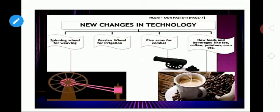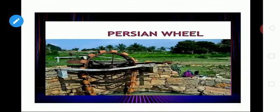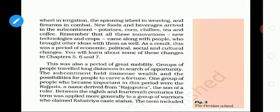New foods and beverages like tea, coffee, potatoes, and chillies also came into existence. All these innovations — new technologies and crops — came along with people who brought other ideas with them. As a result, this was a period of economic, political, social, and cultural changes. It was also a period of great mobility, meaning movement of people — groups traveled long distances in search of opportunities and jobs.